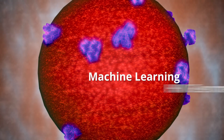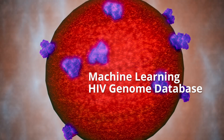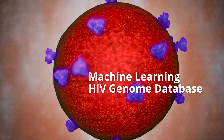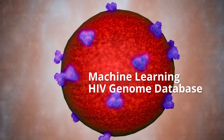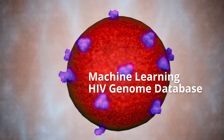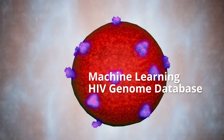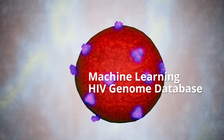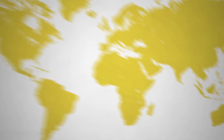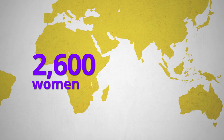Using powerful computer tools and a vast database of HIV genomes, Eddie Korber and her team have designed a vaccine that could change all of that. It's currently being tested by 2,600 women who have volunteered in southern Africa.